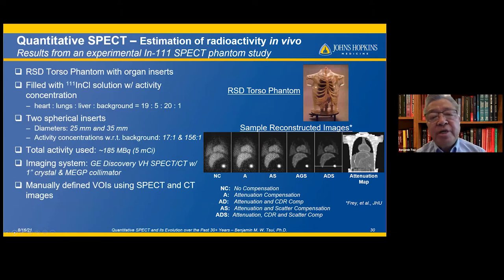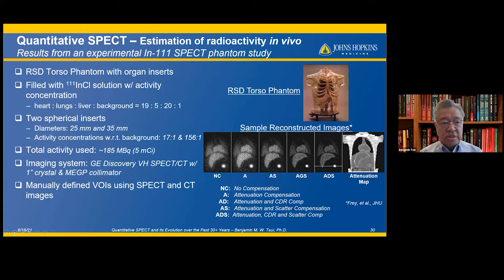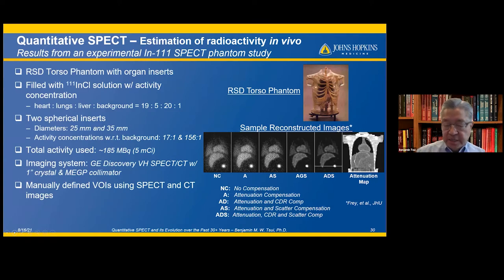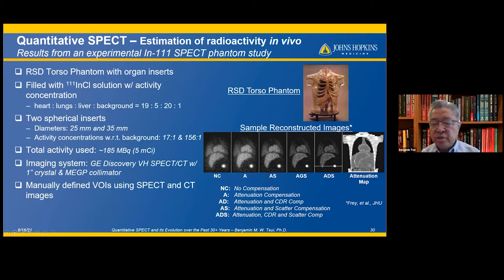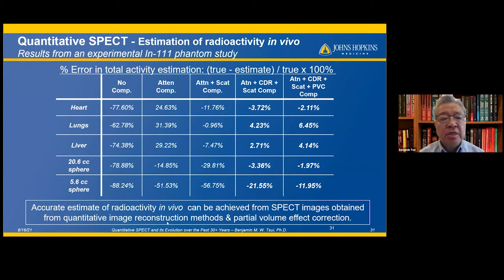An important application is the estimation of activity in vivo. Results from an experimental Indium-111 SPECT phantom study show a phantom filled with In-111 at different activity concentrations in organ cavities and two spherical inserts of different sizes. The right-hand images show SPECT images with different reconstruction methods incorporating compensation for attenuation, collimator-detector response, and scatter.